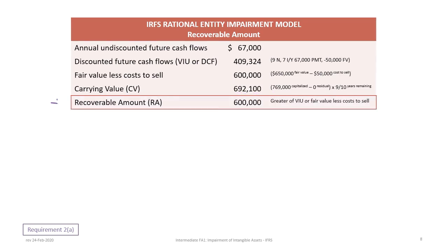We are now in a position to determine the recoverable amount. Recall that the recoverable amount is the greater of value in use or fair value less cost to sell. The value in use was $409,324 and the fair value less cost to sell was $600,000. Applying the rule, the recoverable amount is $600,000 because it is greater than the value in use of $409,324.